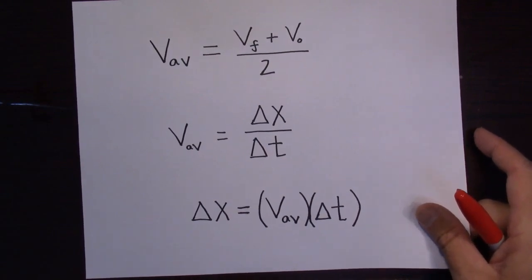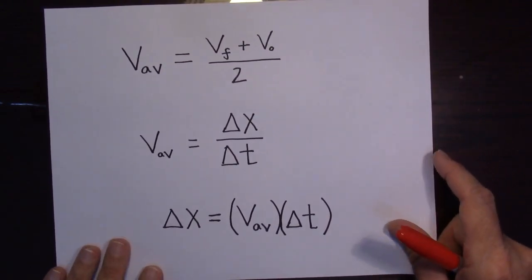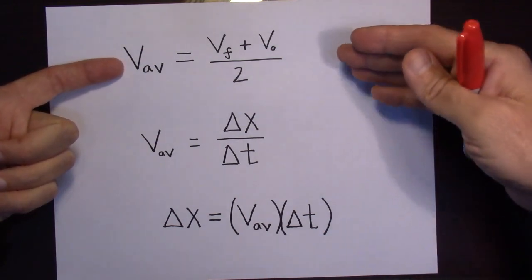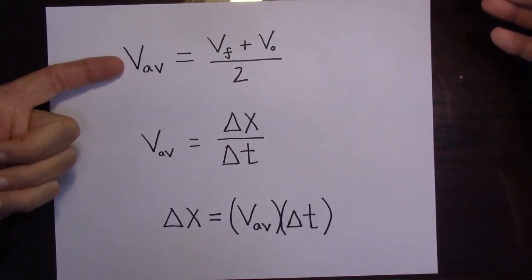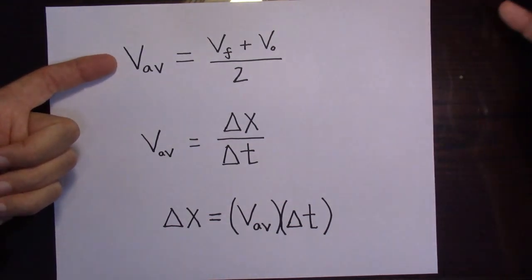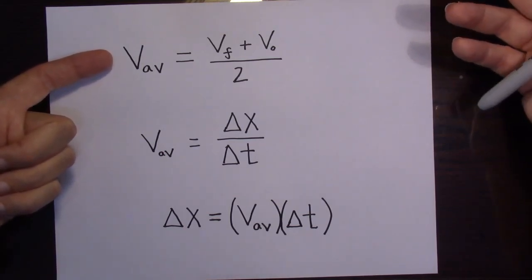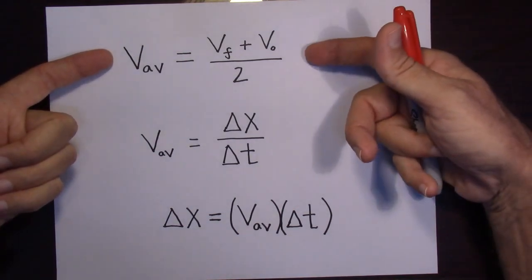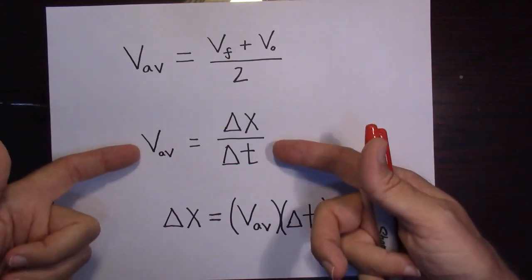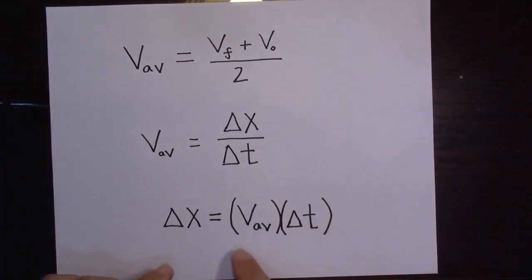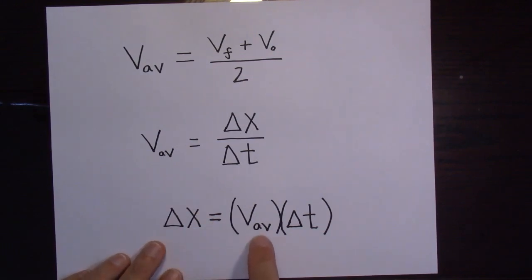The other big idea is that average velocity has two equations. You can only use this if you have constant acceleration. The problems we're talking about are only straight-line problems where acceleration is constant — you can't use this method otherwise. In an introductory physics course that's usually what they do. The average velocity is just the displacement divided by the time, so displacement equals average velocity times delta t.